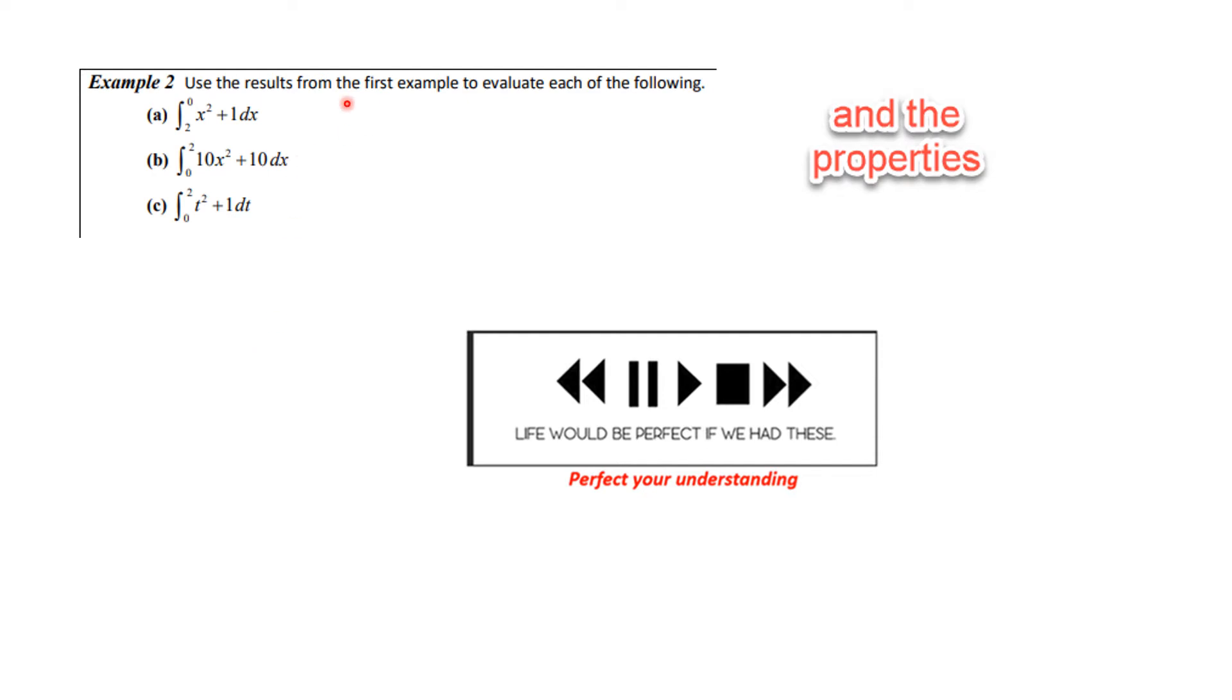Okay, here's a problem I'd like for you to do. Use the results from the first example. By the way, the first example was where we calculated the integral from 0 to 2 of x squared plus 1 dx. You should look in your notes for that. But use the results from the first example and the properties that we just discussed to evaluate the following. You have three problems to do. You know what to do.